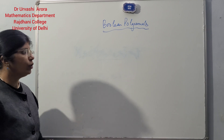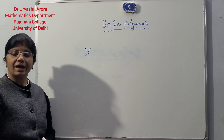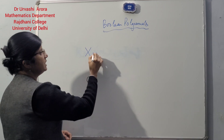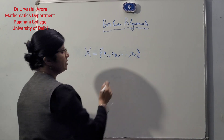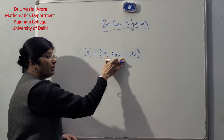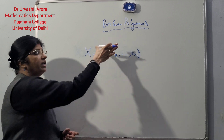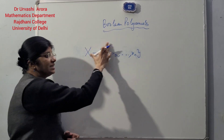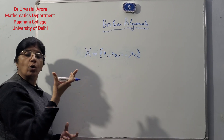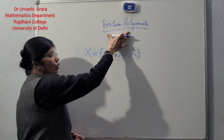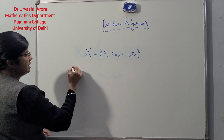When defining a Boolean polynomial, what you need in the beginning is a set of variables. This set I am denoting by capital X. So let X be a set of n variables, denoting the n variables by x1, x2, and so on till xn. These variables can also be called indeterminates or symbols. So to start with, when you are defining a Boolean polynomial, you need a set of symbols or indeterminates or variables, and this we are taking as capital X. This is how we define a Boolean polynomial over a set of n symbols.